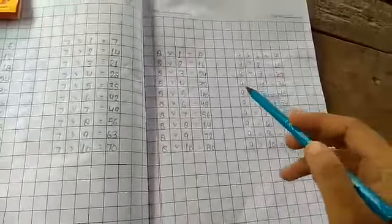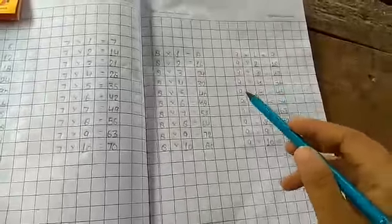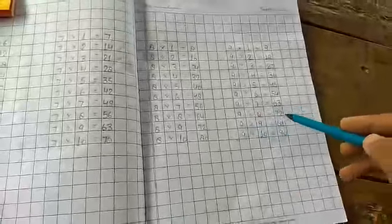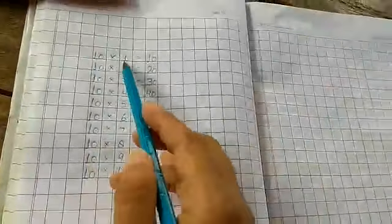9 1's are 9, 9 2's are 18, 9 3's are 27, 9 4's are 36, 9 5's are 45, 9 6's are 54, 9 7's are 63, 9 8's are 72, 9 9's are 81, 9 10's are 90.